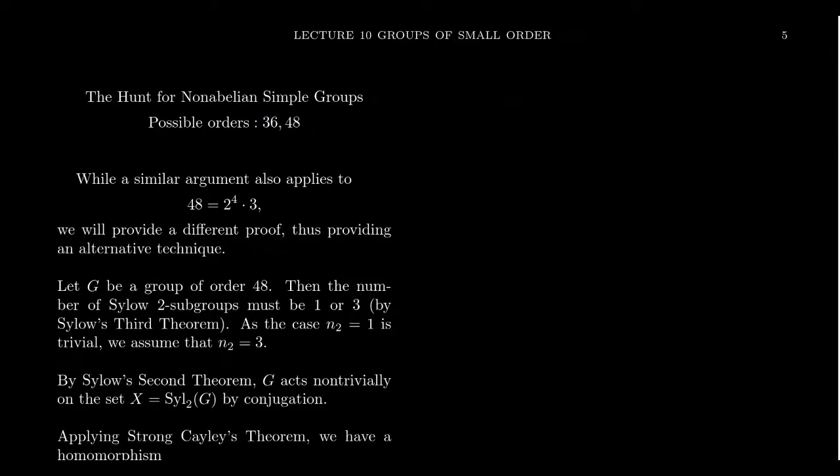So while we couldn't guarantee the Sylow 2-subgroups were normal, the intersection of any two Sylow 2-subgroups is necessarily normal inside this group. This illustrates the power of taking normalizers. Using normalizers and intersections of Sylow subgroups can be useful to find a normal subgroup. Therefore, there is no simple group of order 24. So 24 is now off our list.